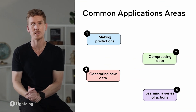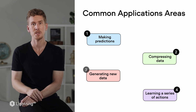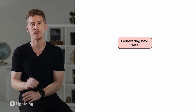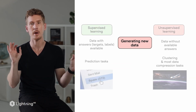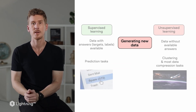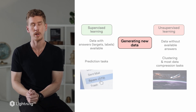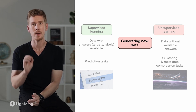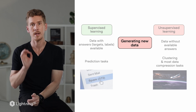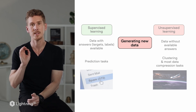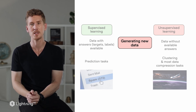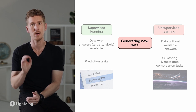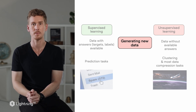Thinking back to the four application areas previously discussed, the application of generating new data sits somewhere in between supervised and unsupervised learning. That's because some methods for generating new data are based on supervised learning, while others are based on unsupervised learning where no label information is used.